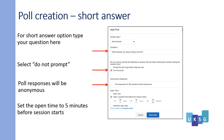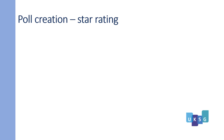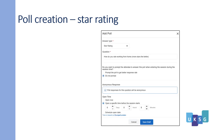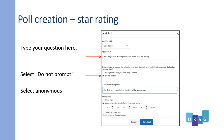Set the open time to 5 minutes before the session starts. For star rating, where the user can select up to 5 stars, type your question here. Select Do Not Prompt and select anonymous. Select open time to 5 minutes before your session starts.